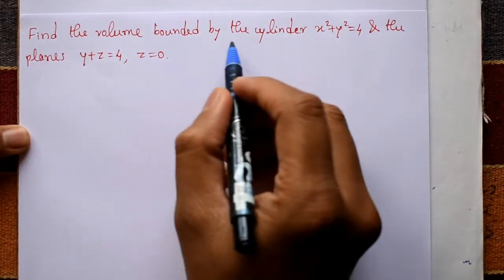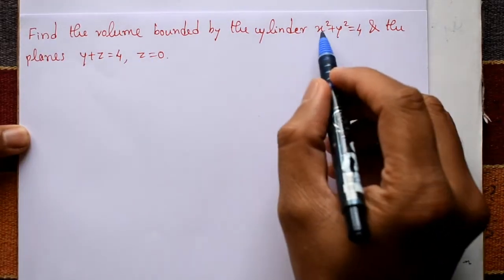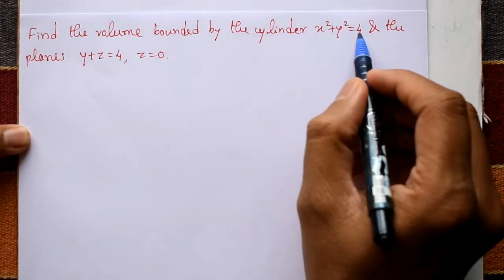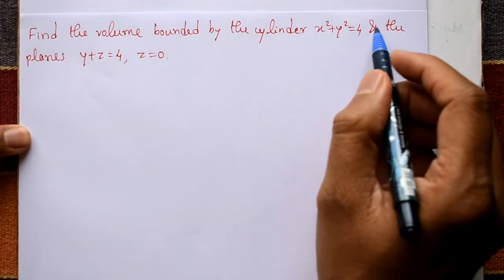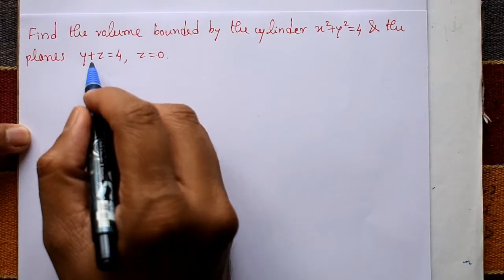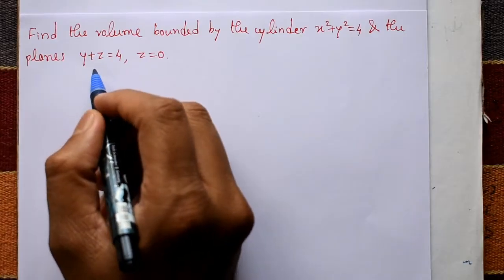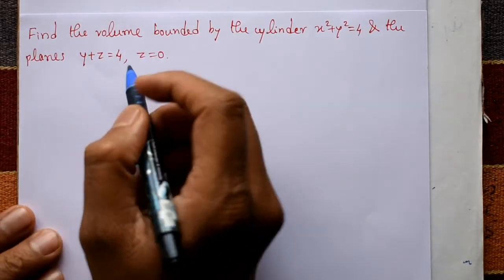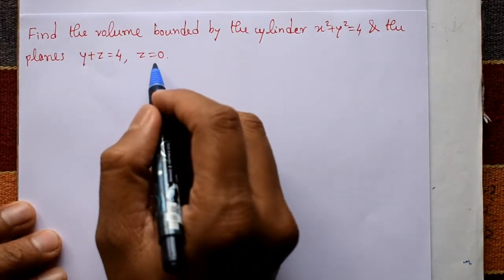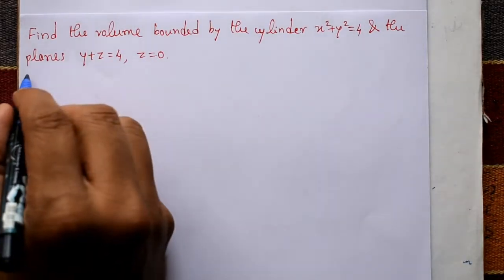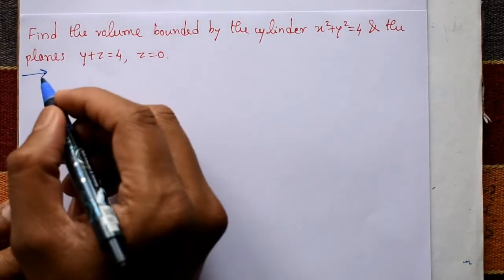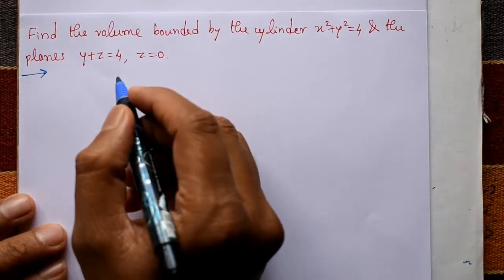Find the volume bounded by the cylinder x squared plus y squared equals 4, and the planes y plus z equals 4 and z equals 0. This is a very simple example.